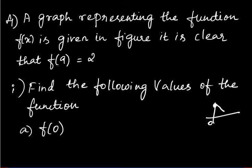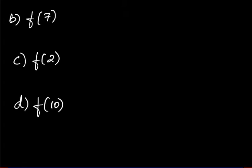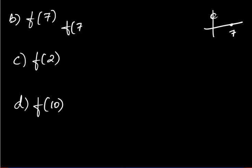At x = 0, the value is 9, so f(0) = 9. To find f(7), look at your x-axis and see exactly where x = 7 corresponds on the y-axis. So f(7) = 6.